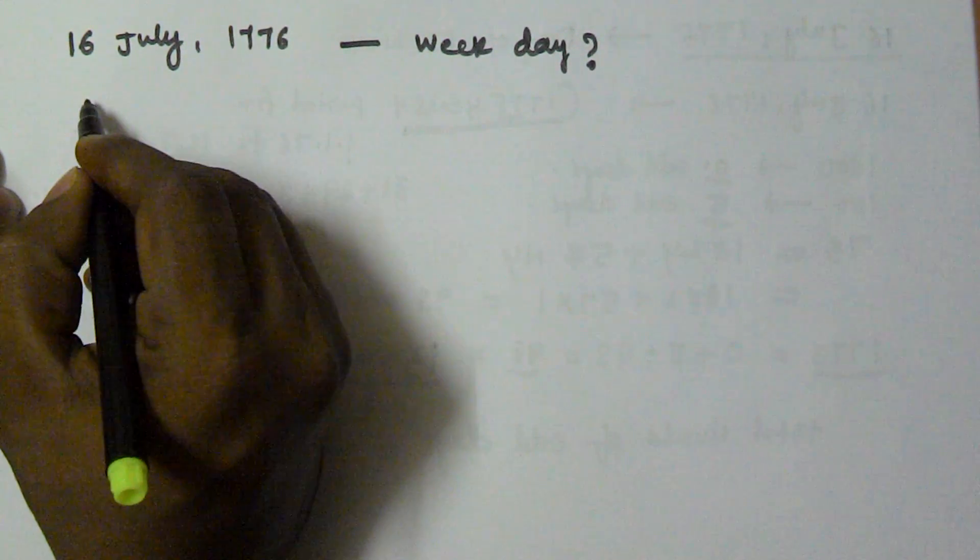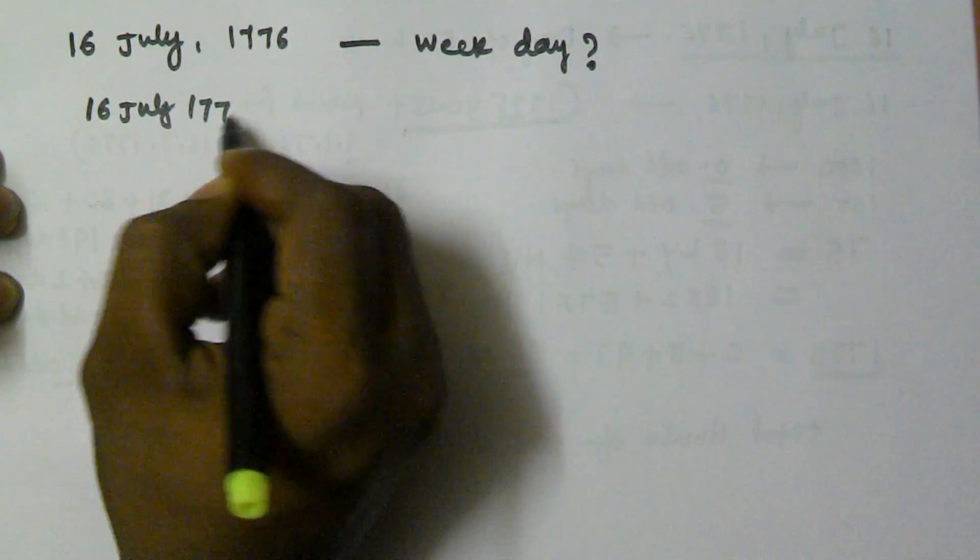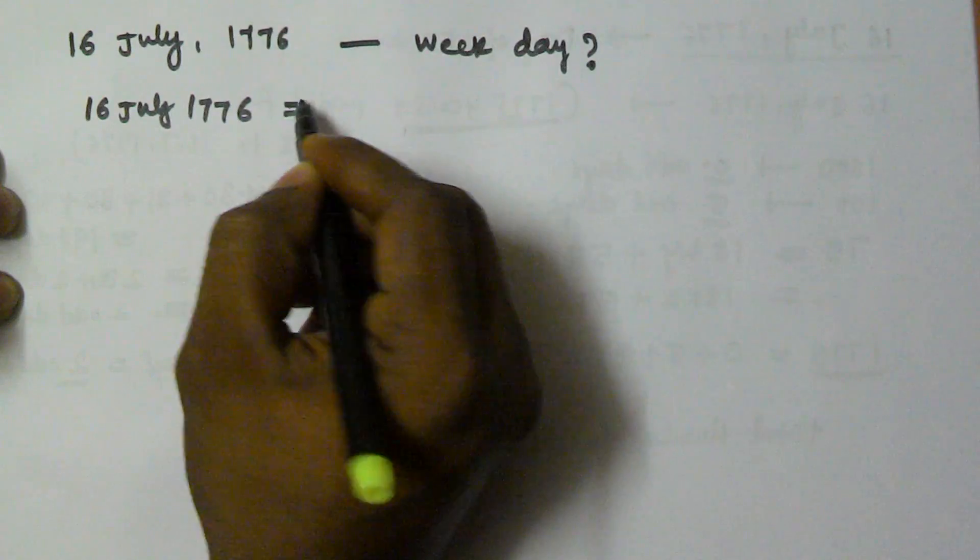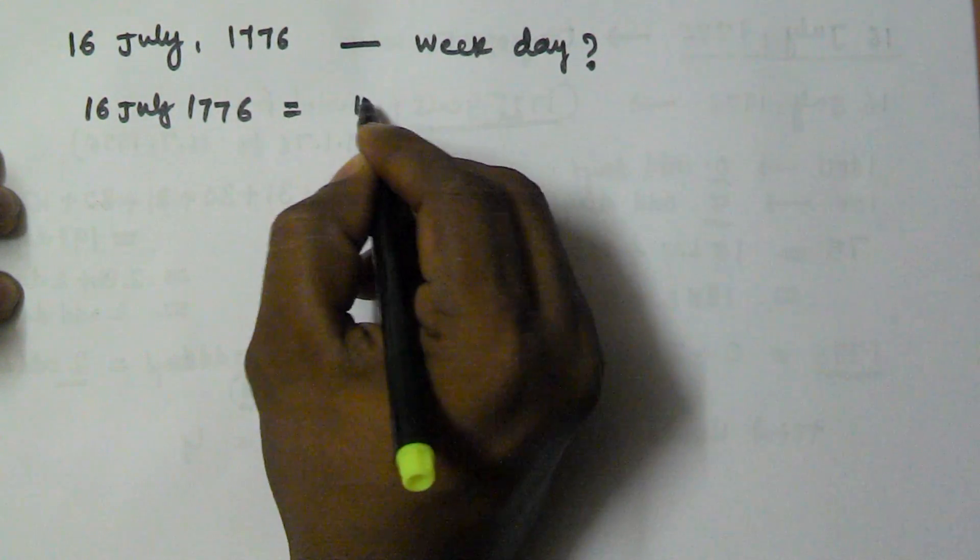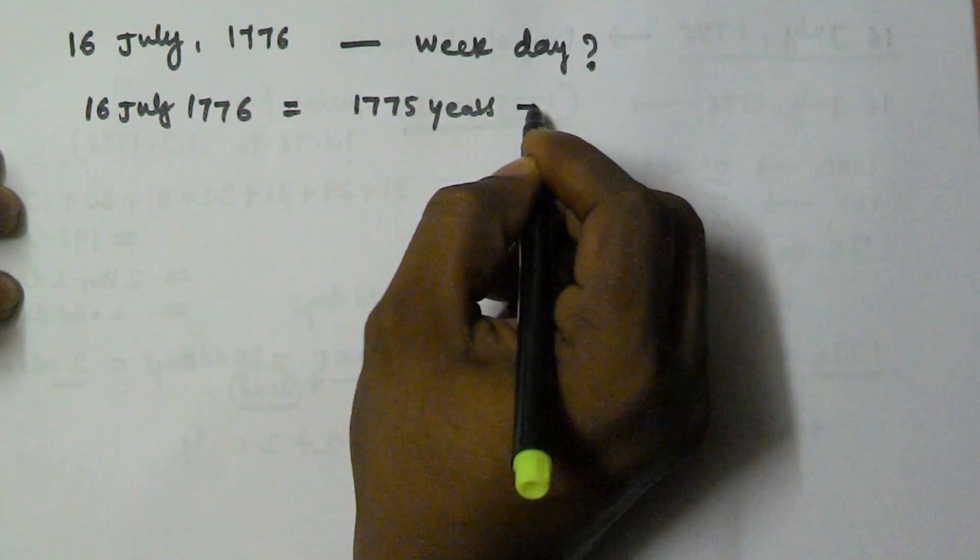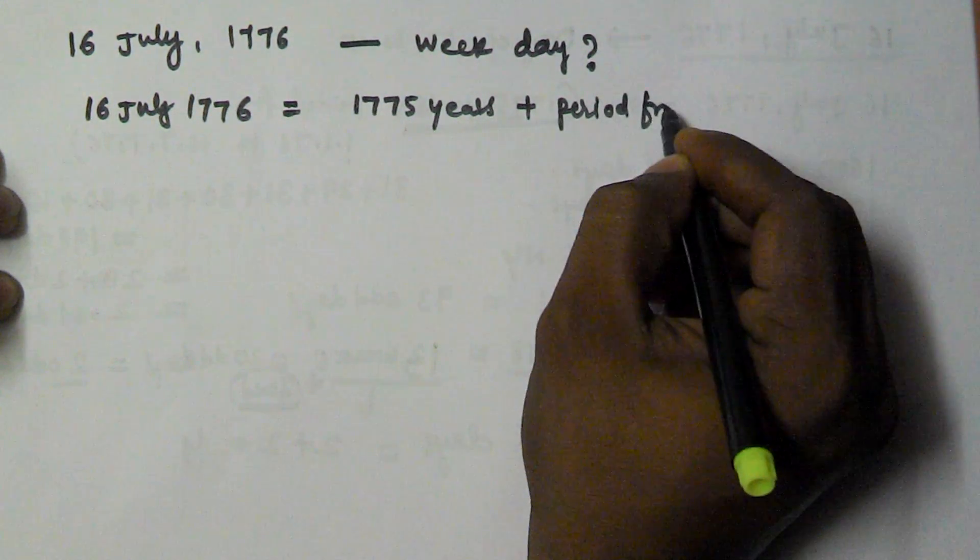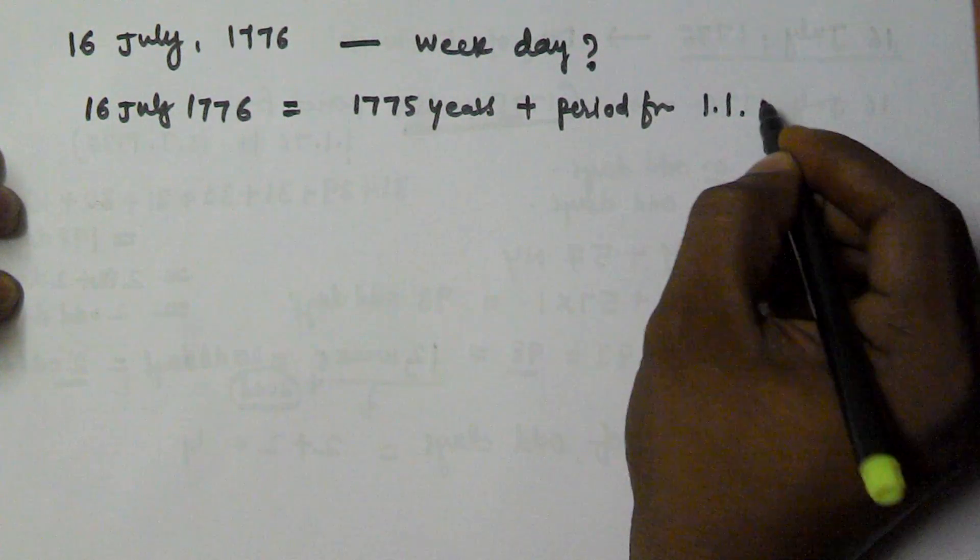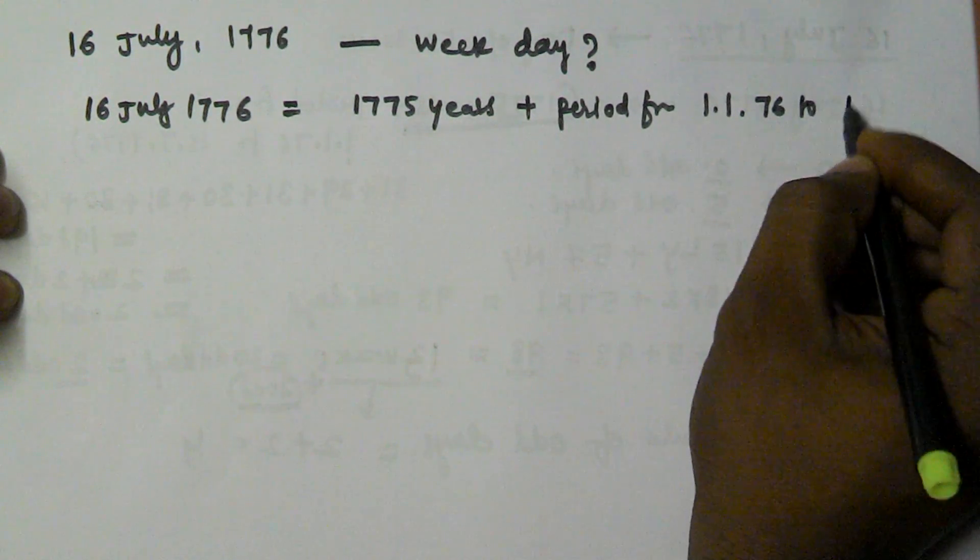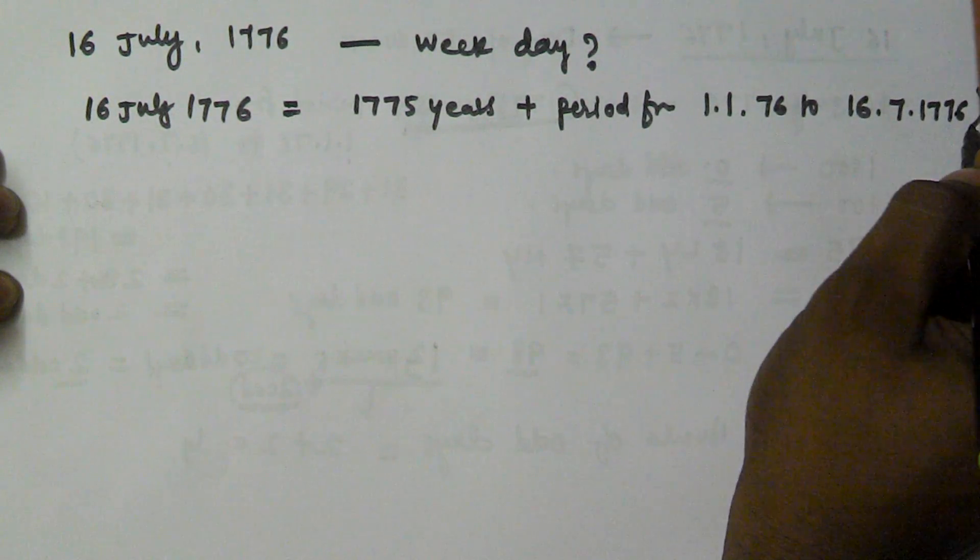The date 16th July 1776 can be divided as 1775 years plus period from 1st January 76 to 16th July 1776.